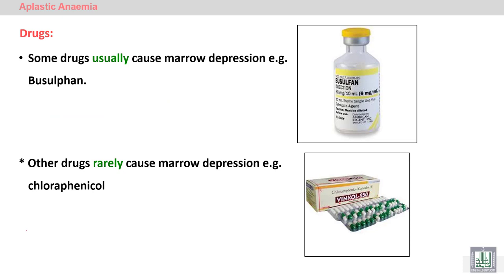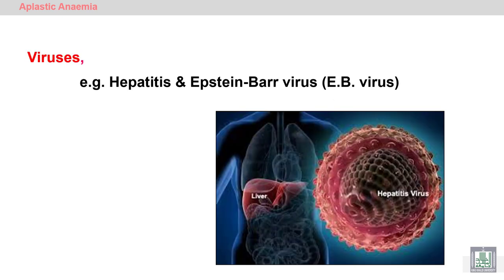Acquired aplastic anemia can occur as a side effect of some drugs, such as chemotherapy, or antibiotics like chloramphenicol, which was used in the treatment of typhoid fever. It can also be caused by exposure to infections like viral hepatitis or Epstein-Barr virus.